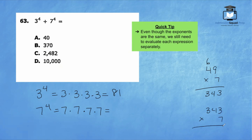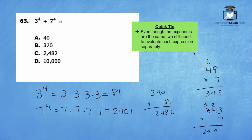7 times 3 is 21. 7 times 4 is 28 plus 2 is 30, and 7 times 3 is 21 plus 3 is 24. So we have 2,401. The question asks us to add these two numbers: 2,401 plus 81 gives us 2,482. So the correct answer is choice C.